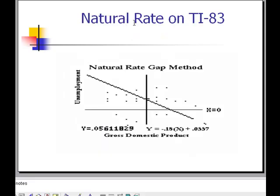I've used my TI-83 to apply a linear regression model to the mean. You can see that when the unemployment rate is 5.6% in the economy, GDP is not changing. That concludes my lecture. Thank you.